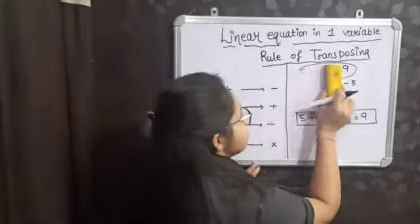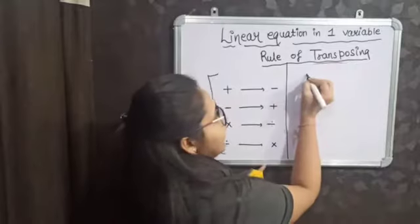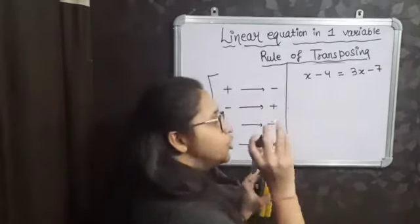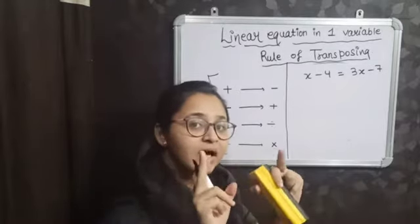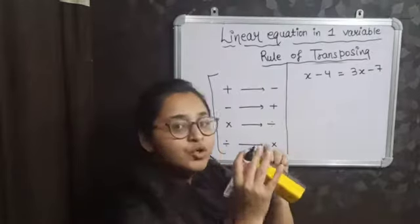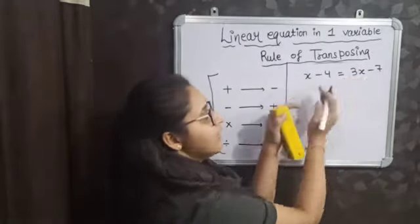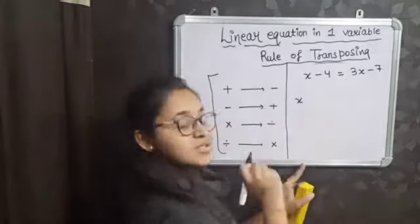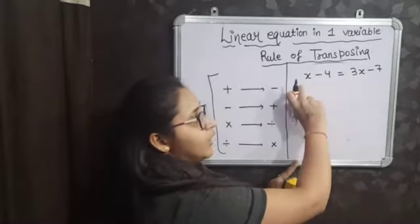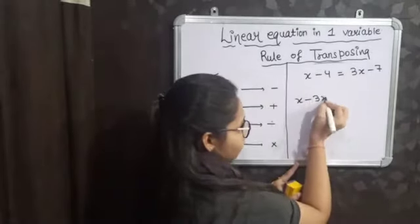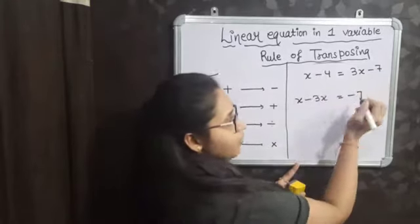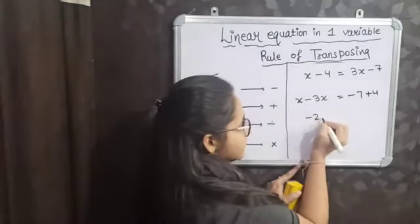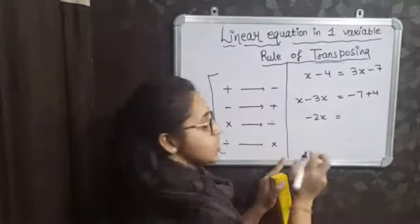Similarly, if I take the example x minus 4 is equal to 3x minus 7. When you are finding the solution, you have to find the value of the variable, which is x. You have to take all the variables on one side and all the constants on the other side. Here the variable is x. Now, 3x is positive and it will become negative. Minus 7 — this minus will become positive. So x minus 3x means minus 2x, and it is equal to minus 7 plus 4, which equals minus 3.